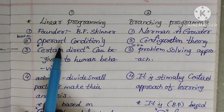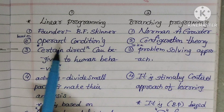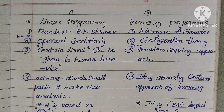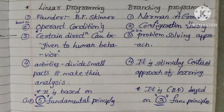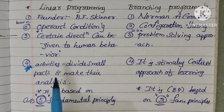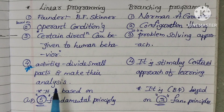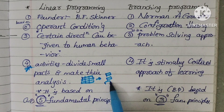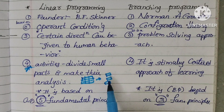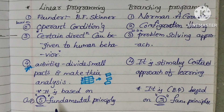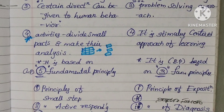This is B.F. Skinner. Certain direction can be given to human behavior. Activities are divided into small parts and their analysis is made. This linear programming is based on 5 fundamental principles. 1. Principle of Small Steps.